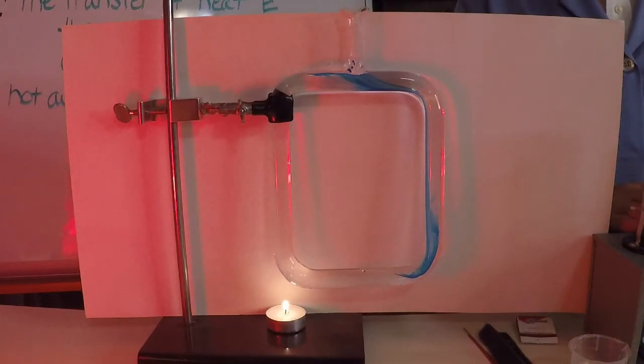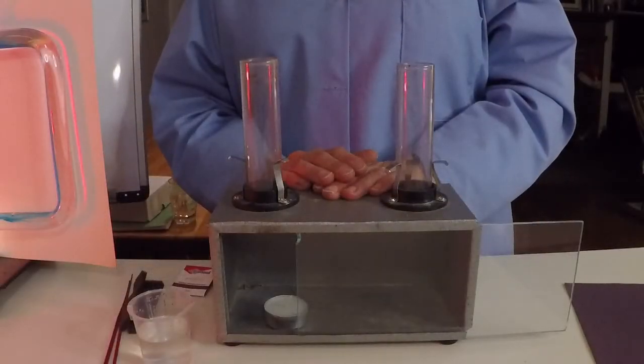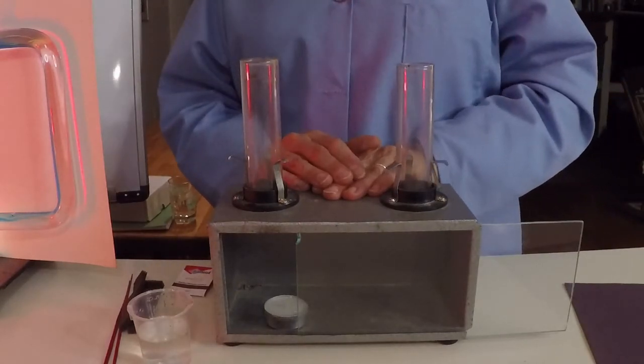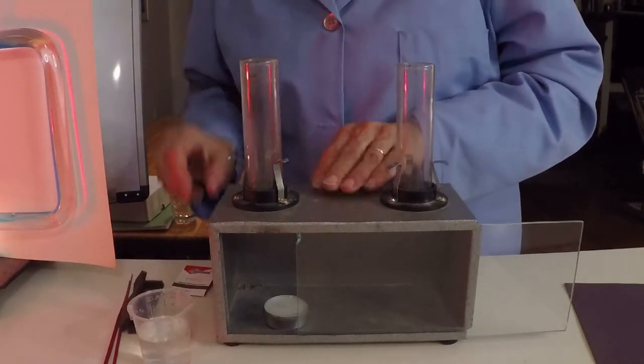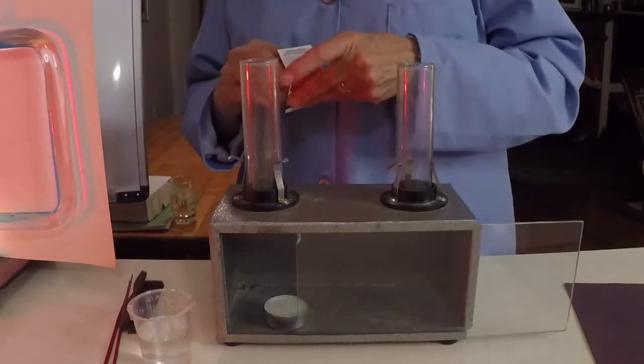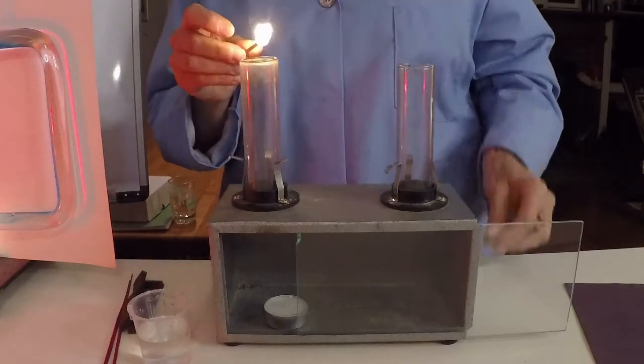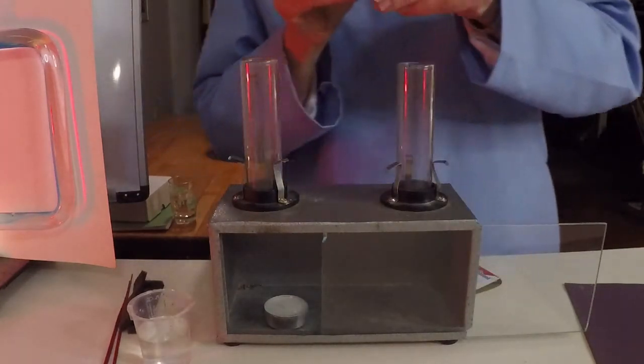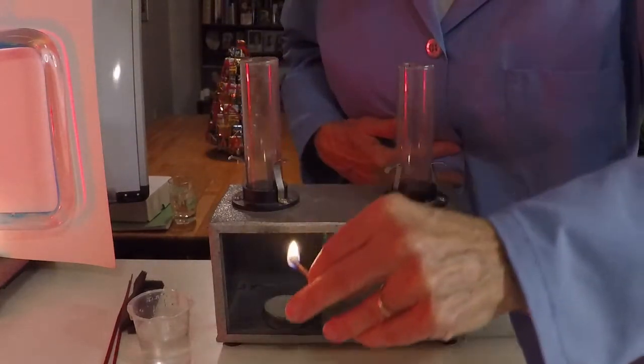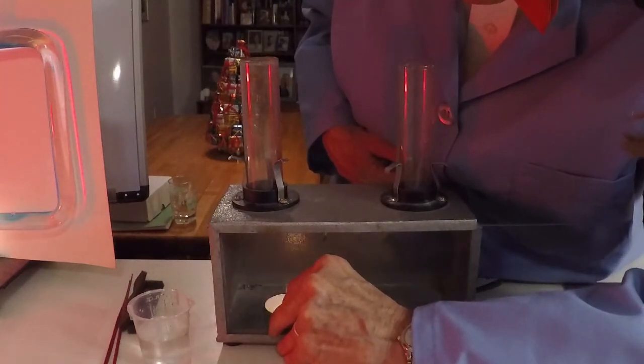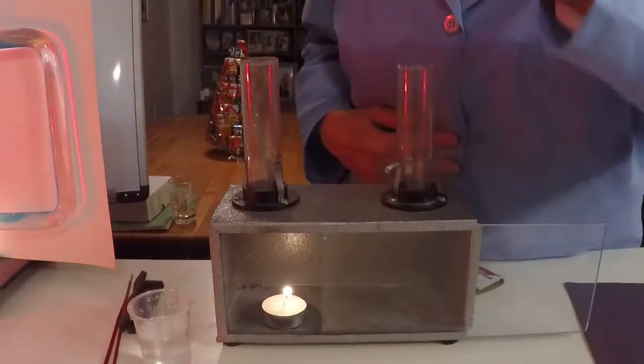All right, so now I'm going to show you a convection current with the convection box and that one's over here. We can come back and visit that one later. Okay, the convection box is going to show us the transfer of heat energy through a gas. All right, so there's a little candle in there. I'm going to light that little candle, doing a lot of playing with matches today if I can get there sideways.